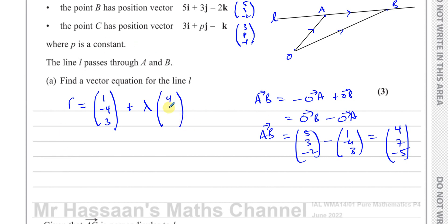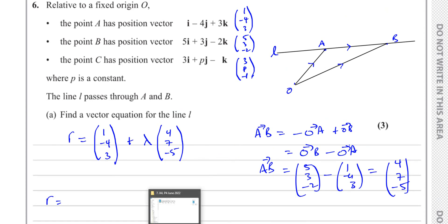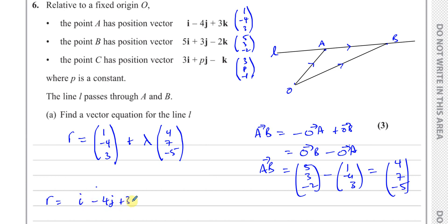So the vector equation of line L is r = (1, -4, 3) + lambda(4, 7, -5). Writing it in the i, j, k form given in the question: r = i minus 4j plus 3k plus lambda times (4i + 7j minus 5k). That is the answer to part a.